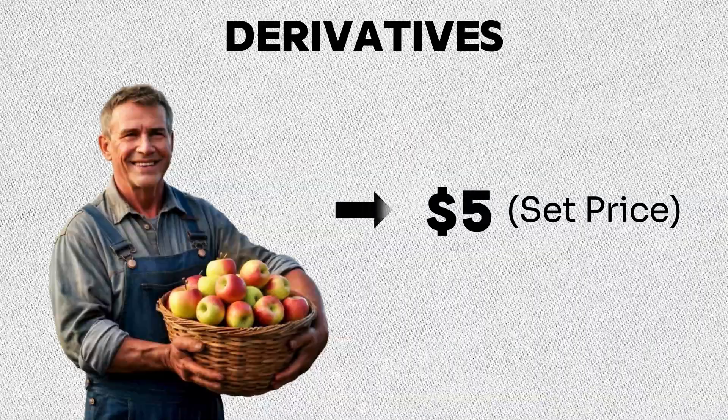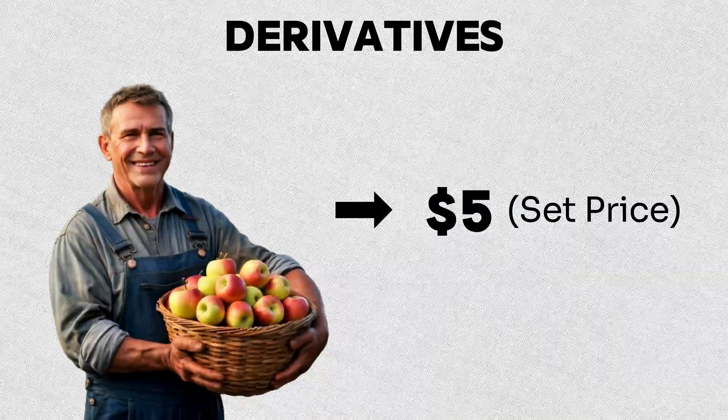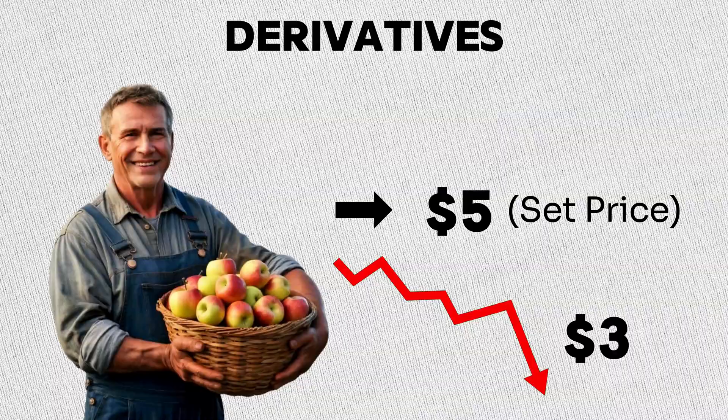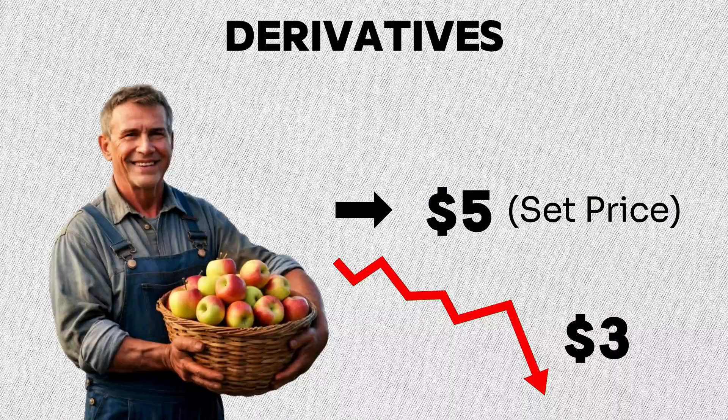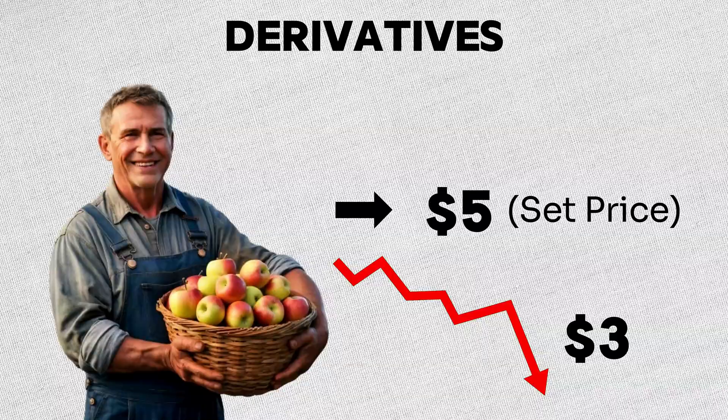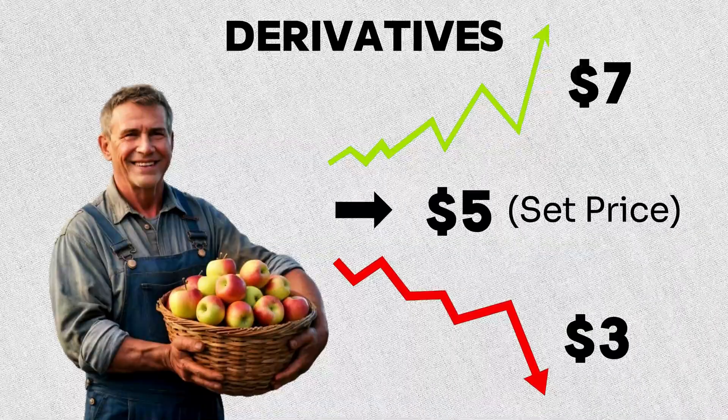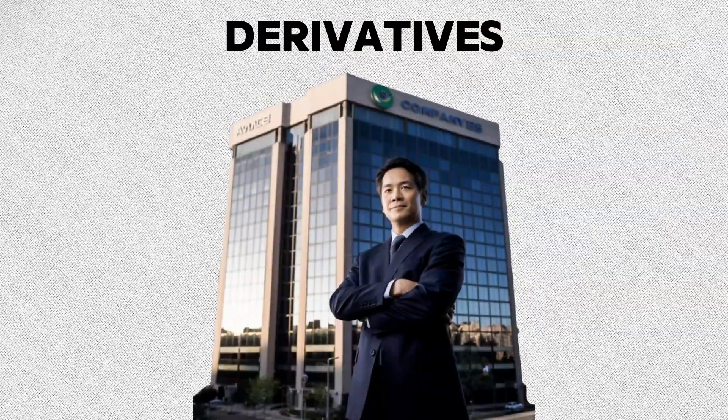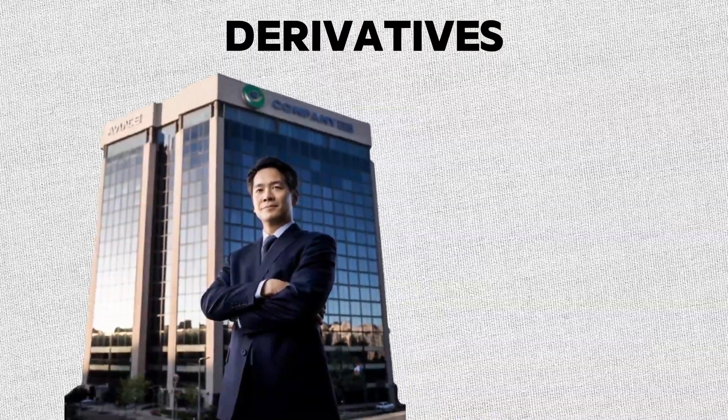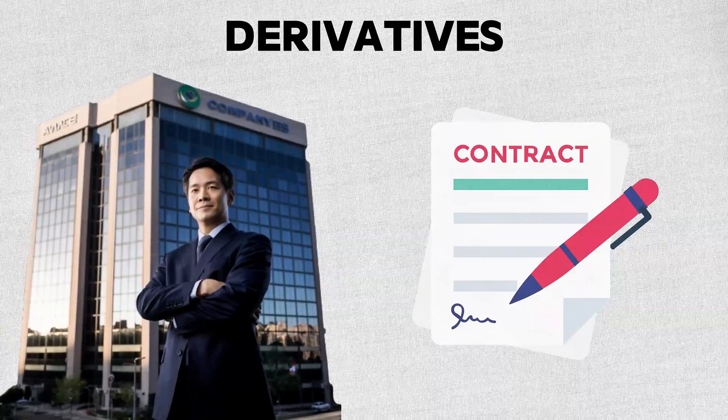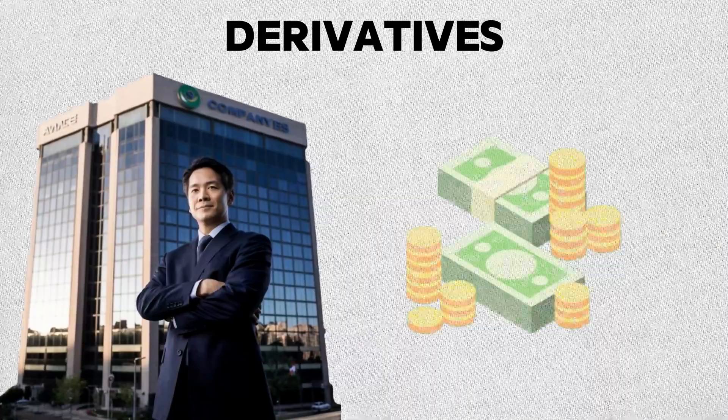You could agree to sell your apples at a set price on a future date. If prices do end up falling, you're protected with that pre-agreed rate, kind of like insurance against losses. But if prices actually go up, you'd miss out on those higher profits from selling on the open market. The same idea applies to businesses that use your apples. They can use these contracts to protect themselves from price hikes that could eat into their profits.